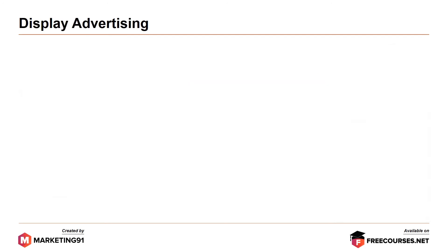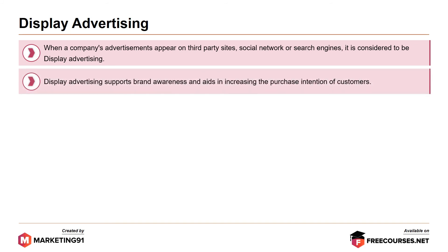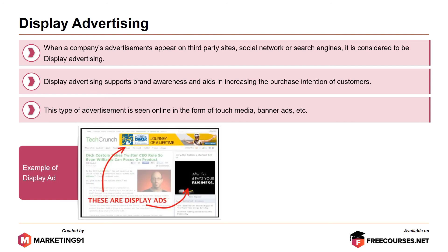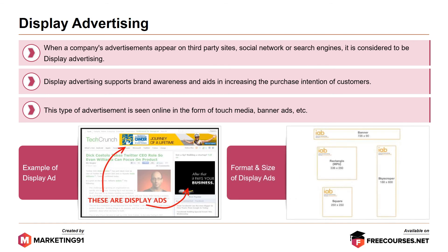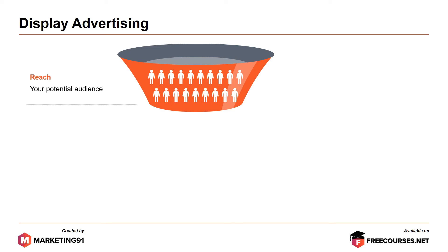Now moving on to display advertising. When a company's advertisements appear on third-party sites, social networks or search engines, it is considered to be display advertising. Display advertising supports brand awareness and aids in increasing the purchase intention of customers. This type of advertisement is seen online in the form of touch media, banners, etc. Following is an example of display ads as shown in the figure pointed with red arrows. On the right side are the format and size of display ads. The three aspects important here are reach, the click-through rate, and conversion.